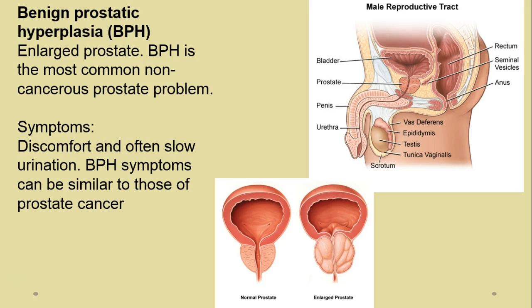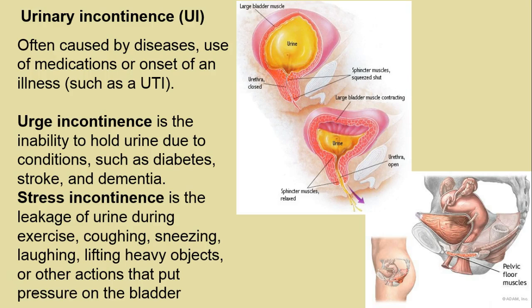Benign prostatic hyperplasia — this is something all men will face if they live long enough. As men age, it becomes hard to urinate standing up because they cannot fully empty the bladder. It's best to sit, lean forward, and squeeze out the last drop of urine. Difficult urination is the main symptom, but the problem is sometimes we think it's BPH when it's really cancer, so it must be tested.